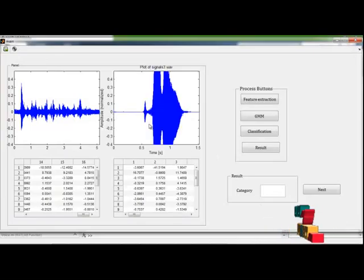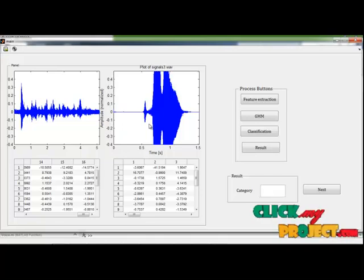Then next choose any one of the signals. The signal is chosen separately and values are extracted for the individual signal. Then click the feature extraction button.